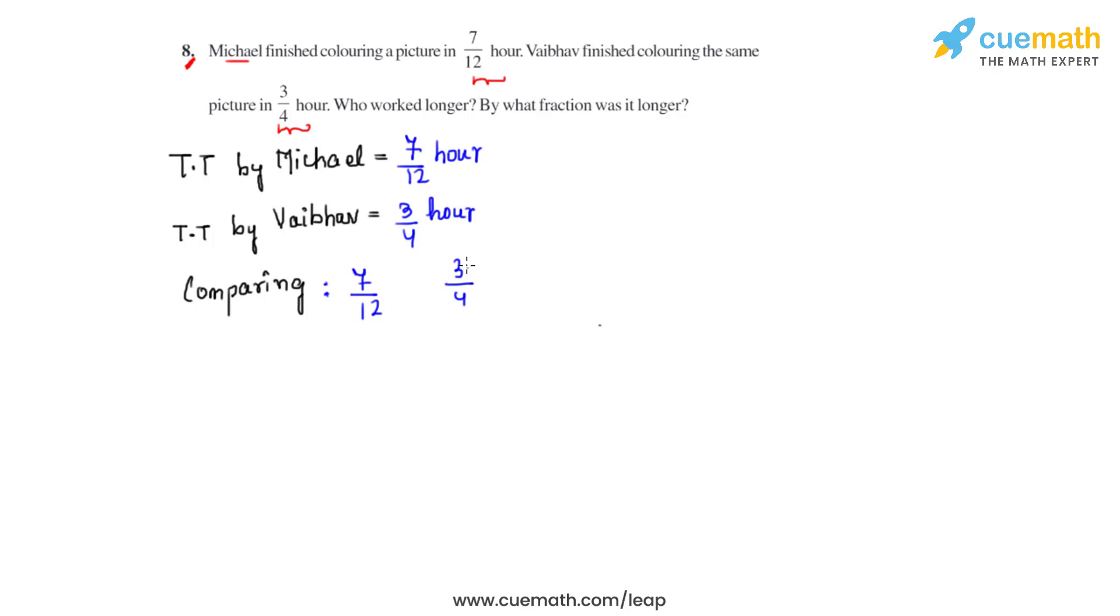To compare, we can multiply the numerator and the denominator of the second fraction with 3 so that the denominator comes as 12 and we will get it as 9 over 12.